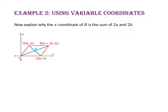Now explain why the x-coordinate of point B is 2A plus 2B. The x-coordinate of point C is 2B, which makes this point on my number line 2B. In my parallelogram, this distance would be the same as this distance since our opposite sides are congruent. So this is 2B more than 2A to get out to this point B.